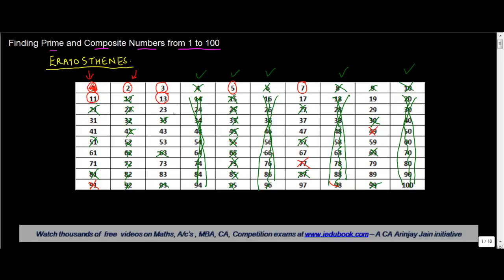Let's say 13. 13 times 2 is 26, then 39, then 52, then 65, 78, 91. Well, all of them are already gone. 17 is again a prime number. So 17 into 2 is 34, 3 times 51, 4 times 68, 5 times 85. 19: 19 times 2 is 38, 3 times is 57, 4 times 76, 5 times 95.